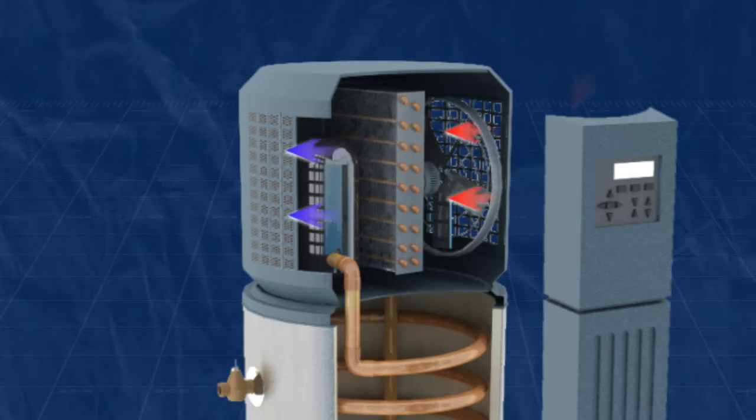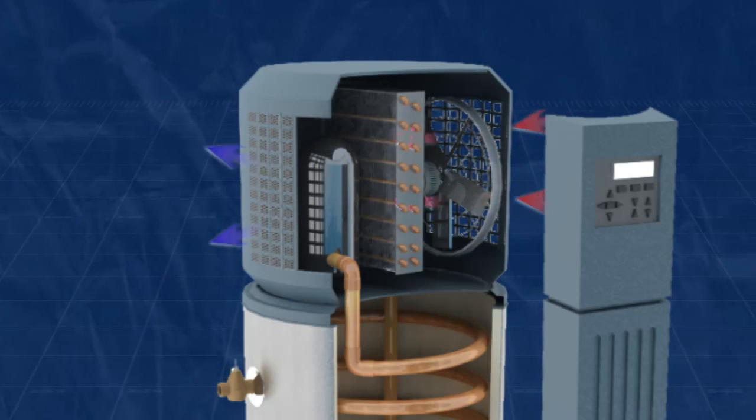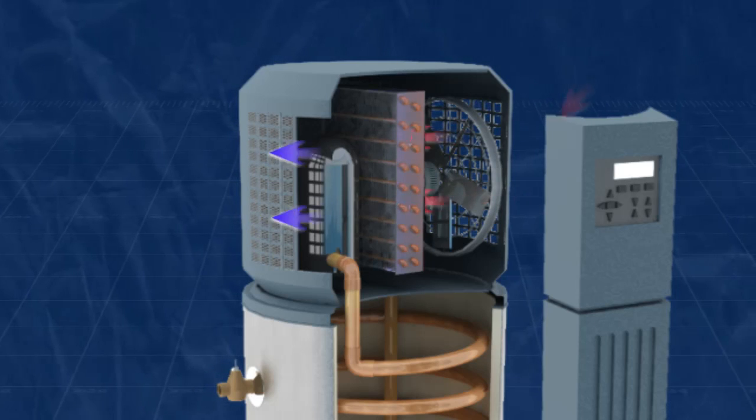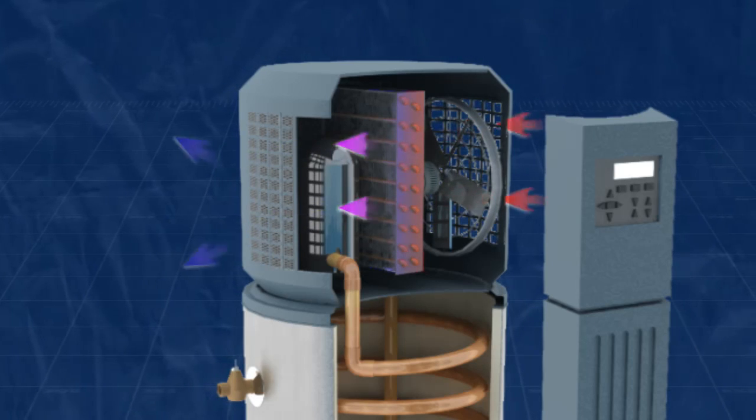a fan draws air across fins on a radiator-like device called an evaporator. The heat in the air is absorbed by refrigerant flowing through the evaporator.